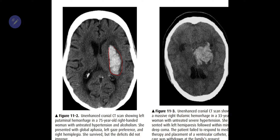On the left you can see this white area — a hyper-dense area, whiter than the surrounding brain matter. That is a bleed in the left cerebral hemisphere, left basal ganglia of this patient. This little dark rim around it is cytotoxic edema accompanying this particular bleed.